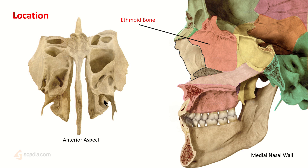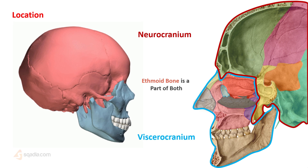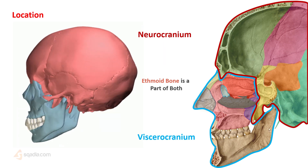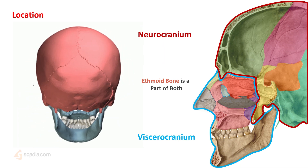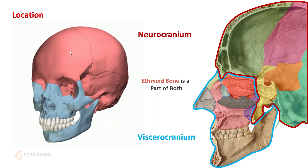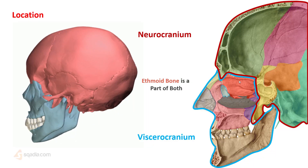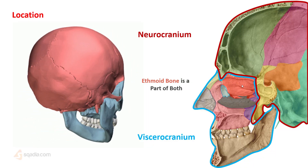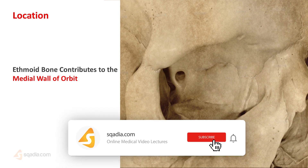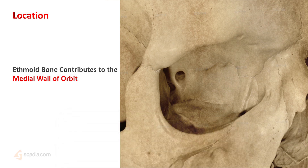From an exam point of view, if asked where is the ethmoid bone, here are some important points to note. The ethmoid bone is situated in the visceral cranium — this blue part here is the visceral cranium, and this red part is the neurocranium. So the ethmoid is located in the skull right here. Another important point is that it contributes to the medial walls of the surface of the orbits.